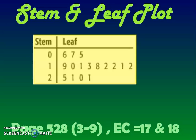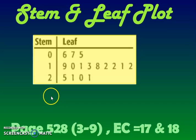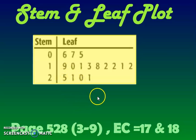Hi everybody, this is Mrs. Ellsworth and today we're going to be talking about stem and leaf plots. They are another unique way of organizing our data to help us find measures of central tendency like mean, median, and mode, or even some variation like range or quartiles. It's a compact way to organize data and perhaps make it easier to use.